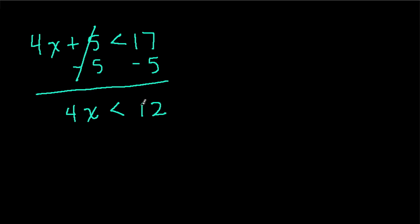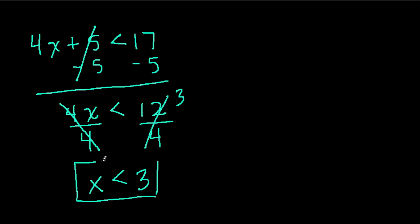4 times something is less than 12. So just like if you were saying 4 times something equals 12, we would divide both sides by 4. And here, 4 divided by 4 is 1, and 12 divided by 4 is 3. So now we're left in the end with an inequality. We find out in the end that x is less than 3.